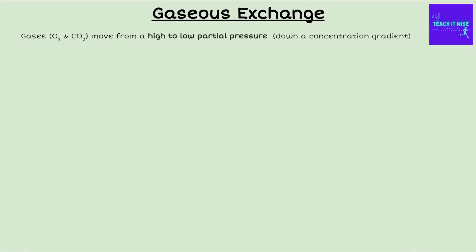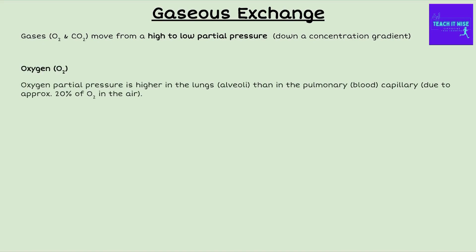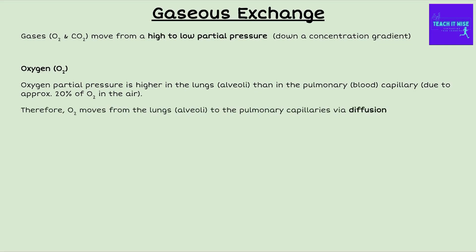To summarise gaseous exchange: gases like oxygen and carbon dioxide move from a high to low partial pressure — this is down a concentration gradient — and they do this through diffusion. Oxygen's partial pressure is higher in the alveoli than in the pulmonary blood capillary, so oxygen moves from the alveoli to the pulmonary capillaries via diffusion.